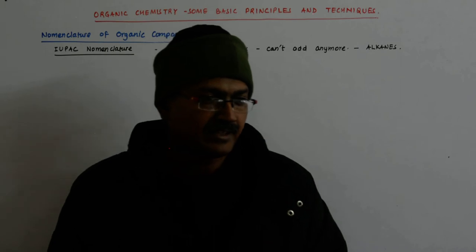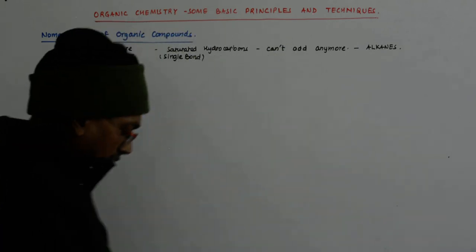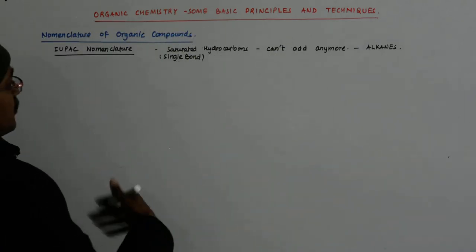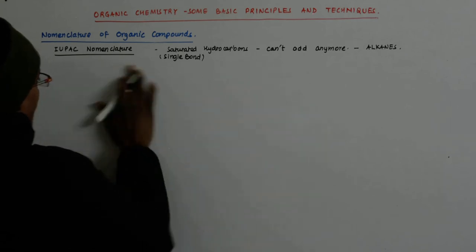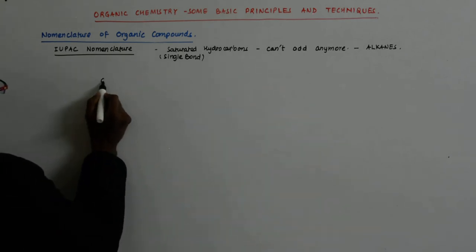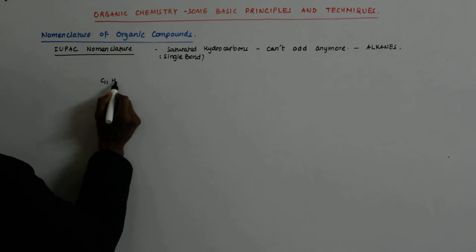So we went till 10, right? Decane. Now what happens if you move ahead from decane? C11, H24.